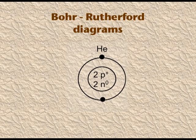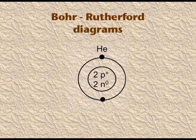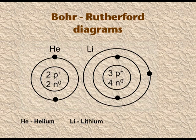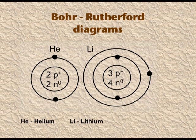Putting together the Bohr and the Rutherford model, in the centre of an atom a nucleus is drawn, and the nucleus contains protons and neutrons as per the element. Then an orbit is drawn around the nucleus. Here you can see the helium atom: two protons and two neutrons in the nucleus, and two electrons in the orbit. One more example — lithium. The atomic number of lithium is three, meaning it has three protons and three electrons. In its nucleus there are three protons and four neutrons, and there are three electrons: two in the inner orbit and one in the outer orbit.